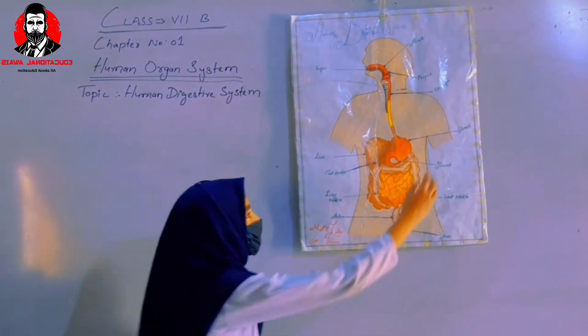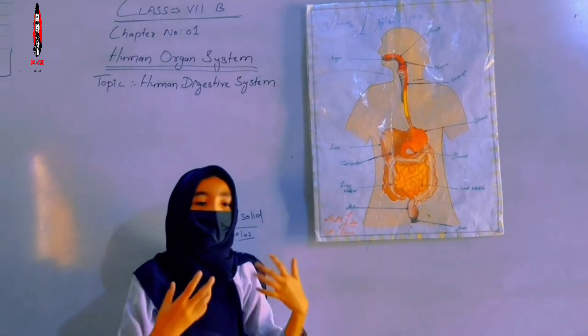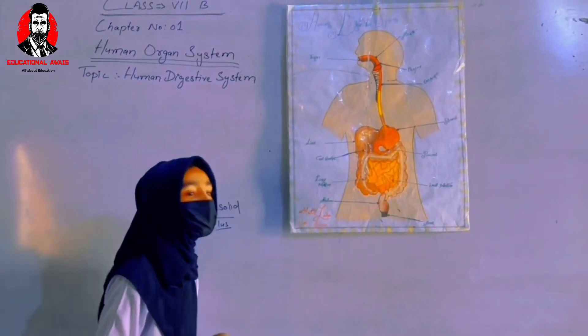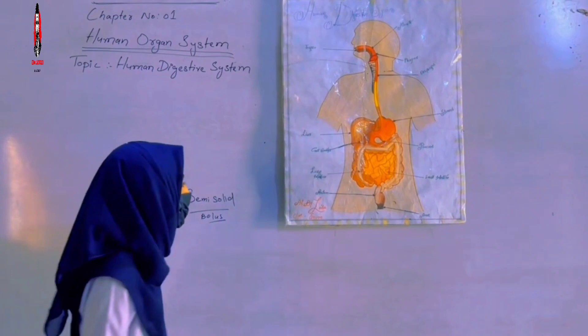When we go to the pharynx, it transports food. There is a layer of mucus layer.